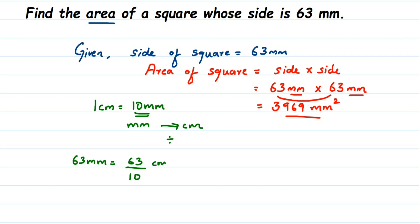When dividing by 10, the unit changes to centimeter. Since 10 has one zero, you place the decimal one digit from the right — after the 3 — giving 6.3 centimeters. So 63 millimeters equals 6.3 centimeters. Now to find the area, it will be 6.3 cm × 6.3 cm.